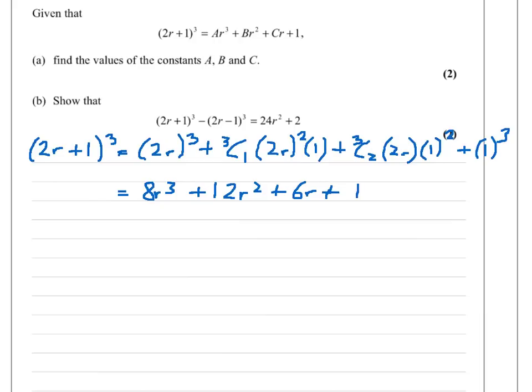Now in part (b), I've been asked to show that (2r+1)³ minus (2r-1)³ equals what they've given me. So I need to find (2r-1)³. This doesn't involve loads of extra work. Notice that instead of plus 1, I have minus 1. So effectively, everywhere I see the 1, I can replace it with minus 1.